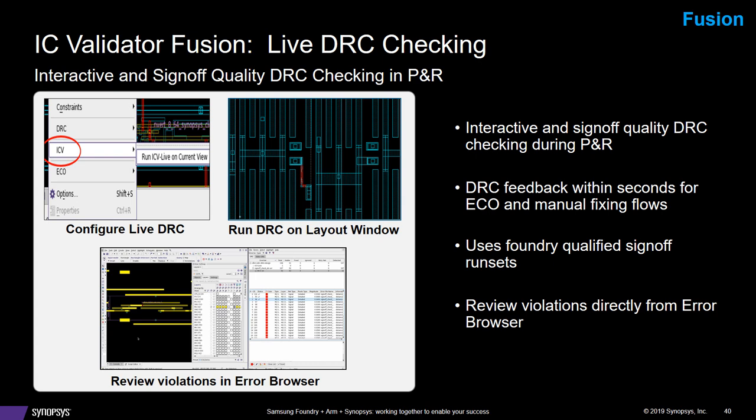Another Fusion — this is in the sign-off portion, bringing in ICV, IC Validator. This slide is talking about the live DRC checking. The advantage is now you're using the sign-off tool to see DRCs in your placement and route results — not based on the tech file you might see within Fusion Compiler, but based on ICV with the full sign-off rule set. These are real DRCs that need to be fixed. And it's fast — because it's working on a small window, it runs fast, iteratively working in small windows within Fusion Compiler. It's a familiar working environment if you're familiar with the browser in Fusion Compiler, so you can run Fusion Compiler but get all the advantages of ICV.